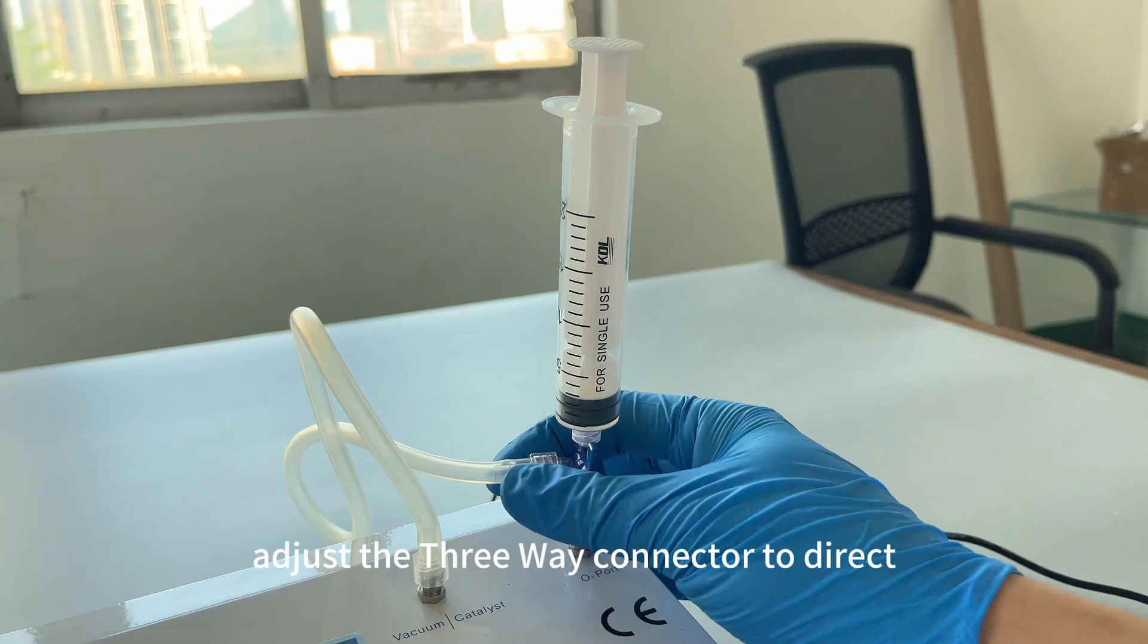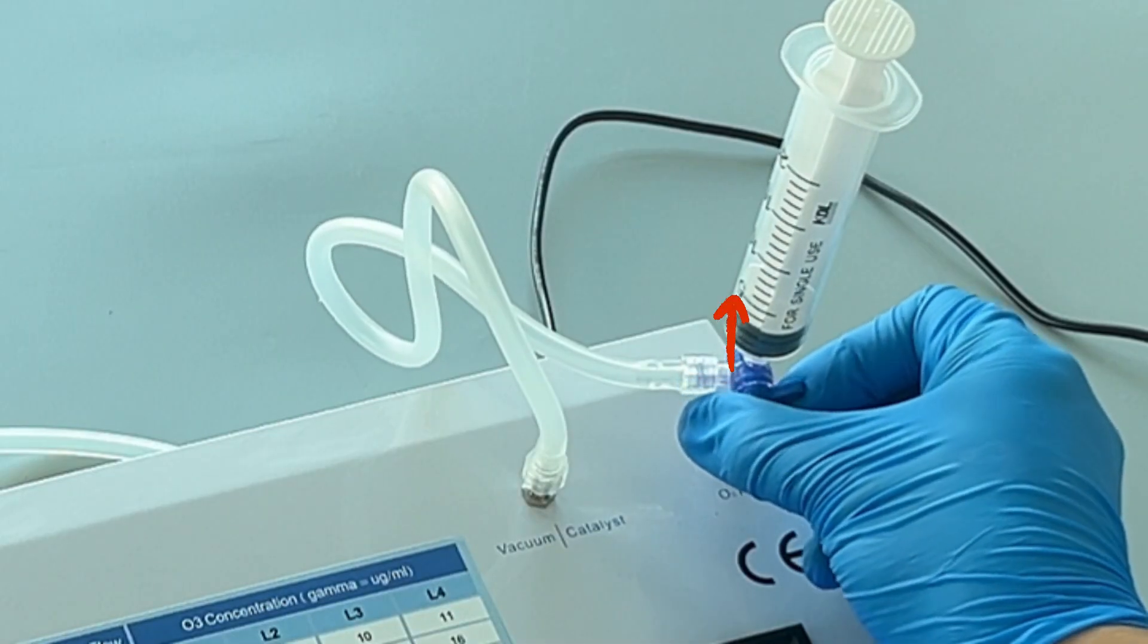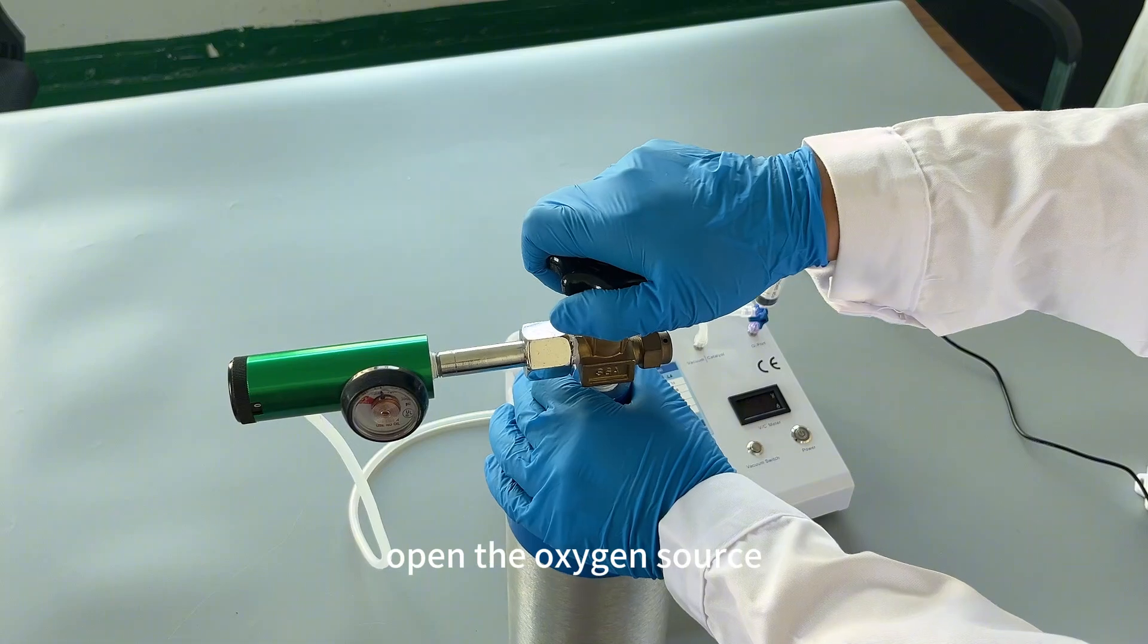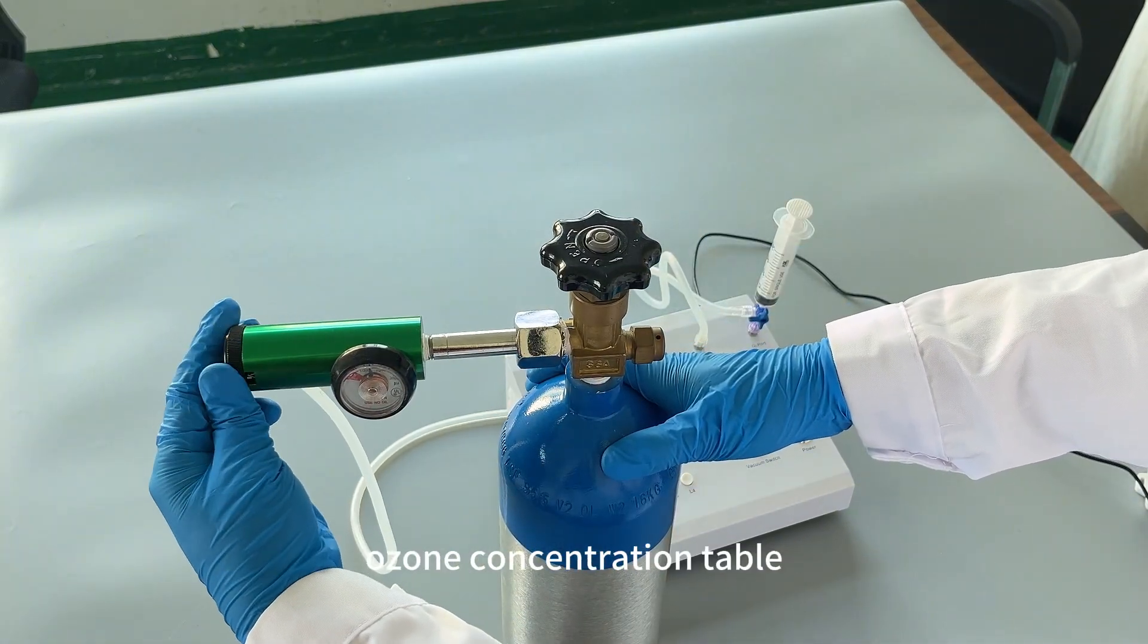Adjust the three-way connector to direct gas flow toward the syringe or ozone bags. Open the oxygen source and set the oxygen flow rate according to the ozone concentration table.